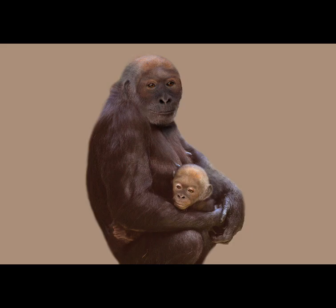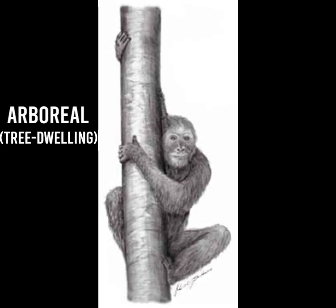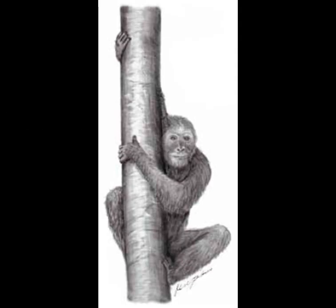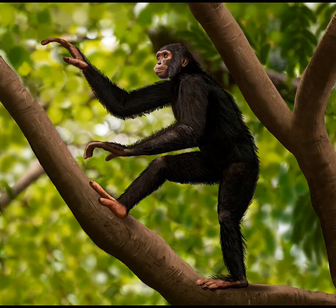Around the same time and place lived Pierolapithecus. This ape, like Dryopithecus, was a frugivore and lived a largely arboreal lifestyle. Its cranial features show remarkable similarities to a gorilla's, as evidenced by the longer snout and robust cheekbones, and it has been suggested by some scientists as a possible candidate for the common ancestor of the African apes.